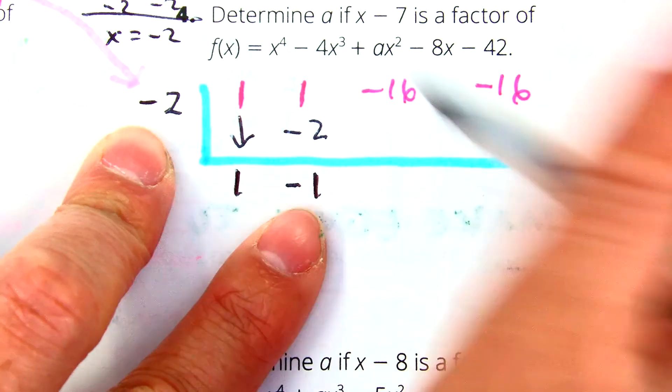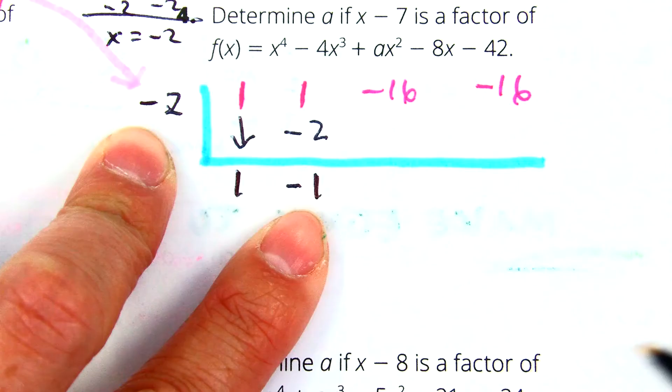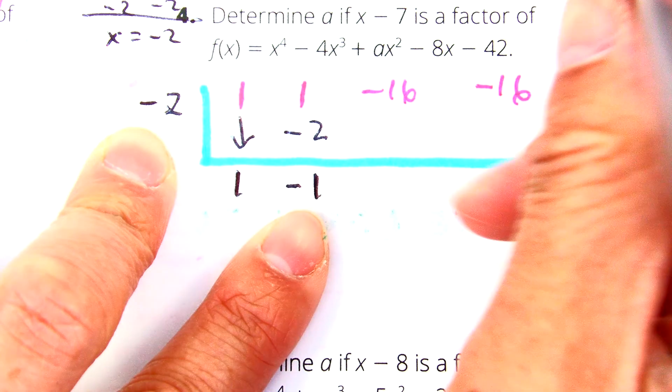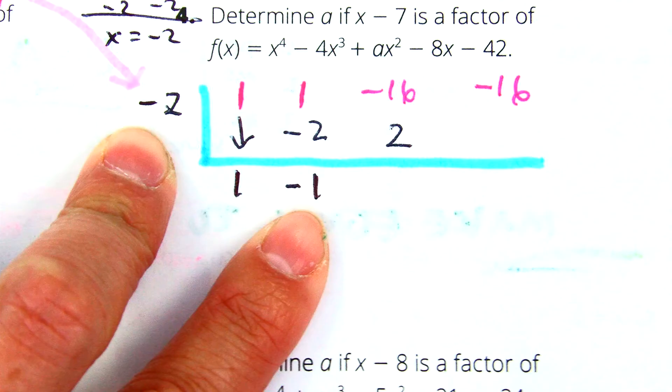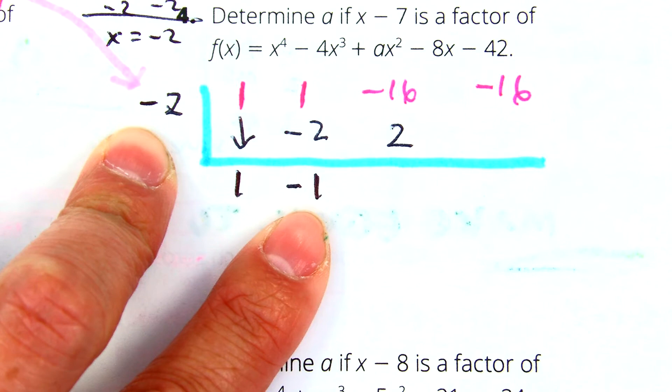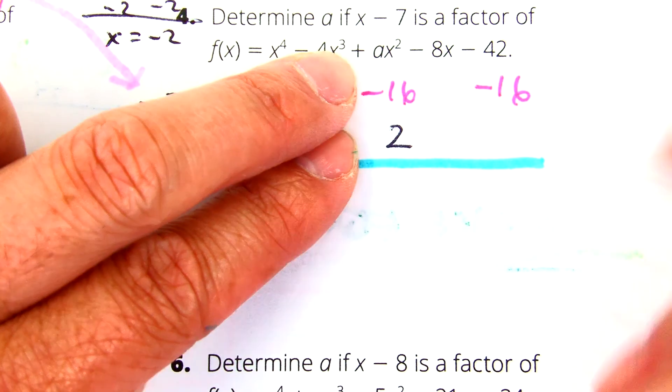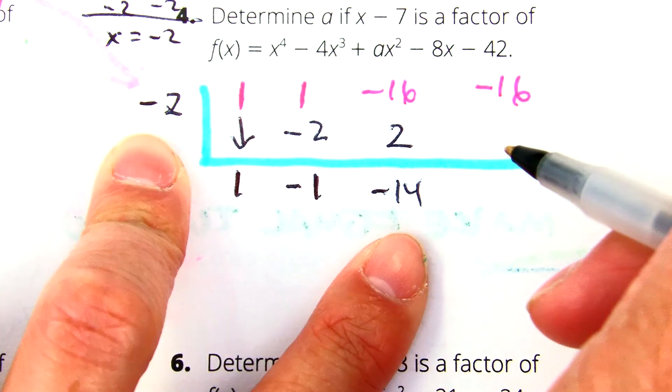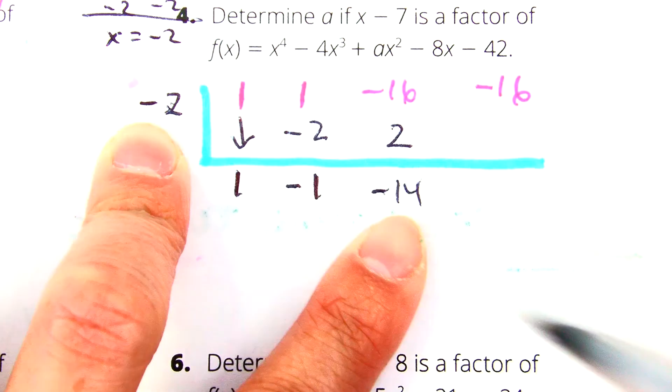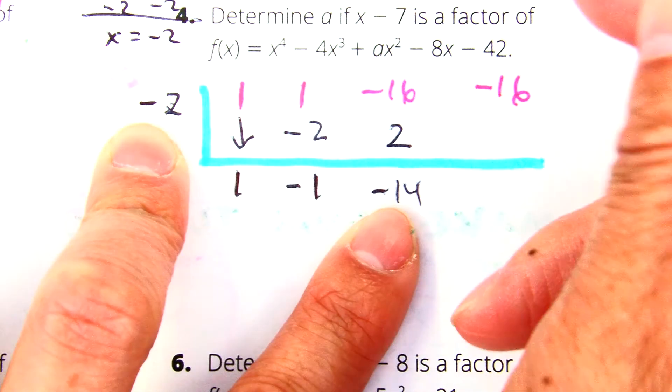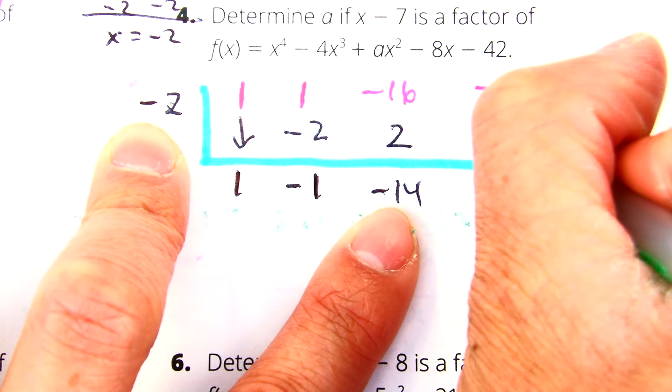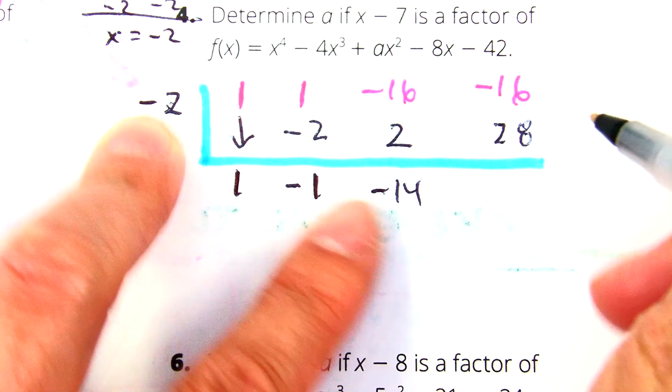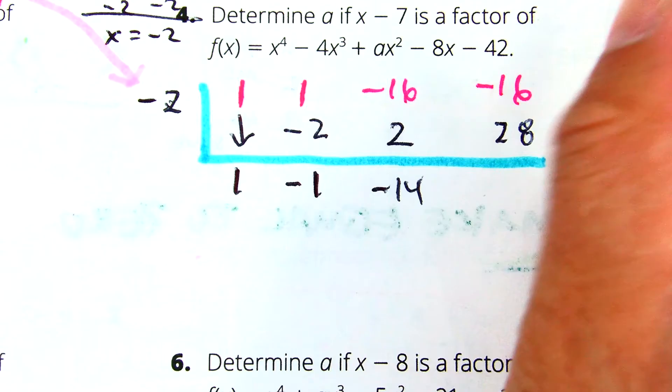Now we're going to multiply diagonally. Negative two times negative one. What does that give? And then what do you do after that? Add down. What do you get? Negative 14. What do you do here? Multiply diagonally. Negative two times negative 14. Positive 28. And then if you add down, you get 12.